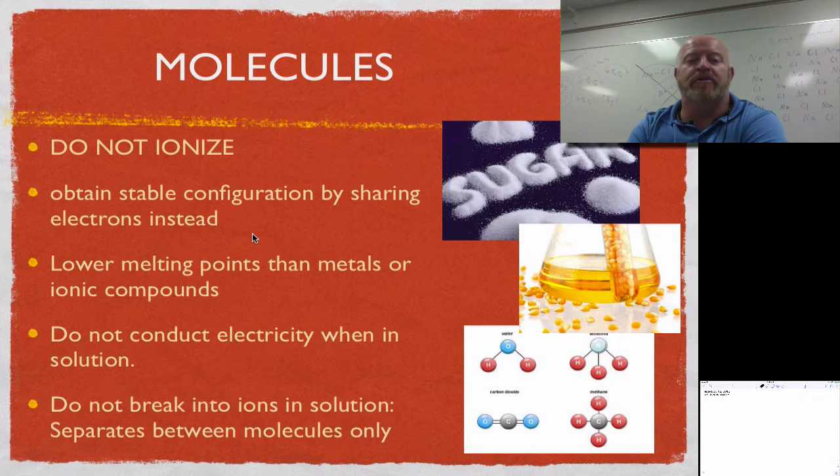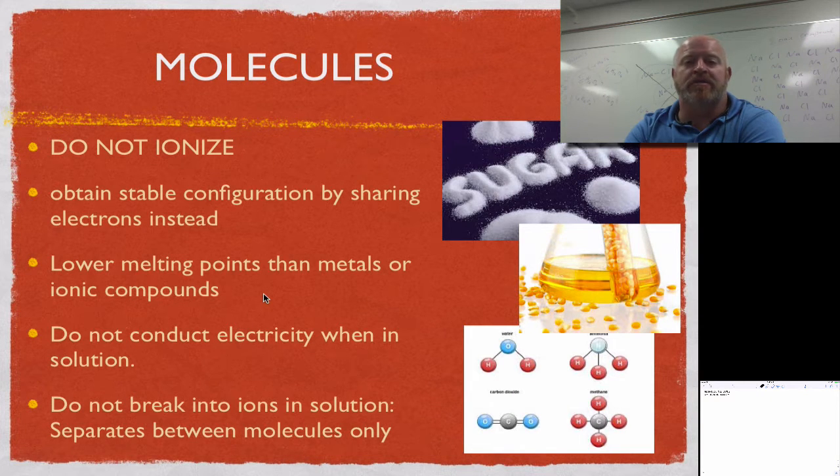They do not ionize but instead get this stable configuration by doing some sharing. As a result, we get these lower melting points. If you remember when we first started talking about ionic compounds and metals as alloys, they formed this nice repeating pattern or crystal lattice. Molecules don't do that.